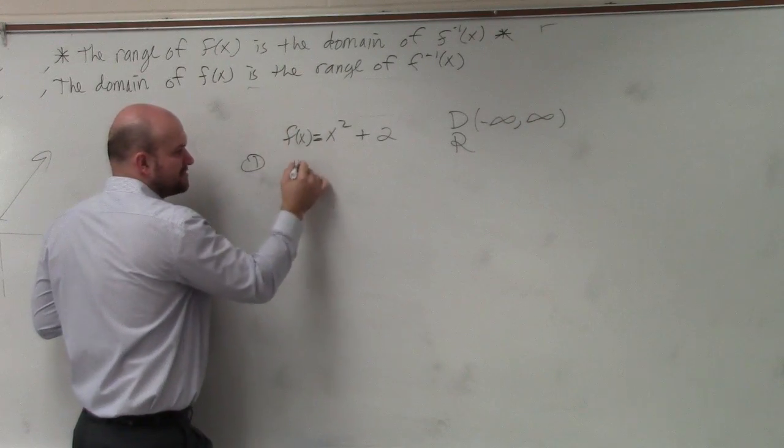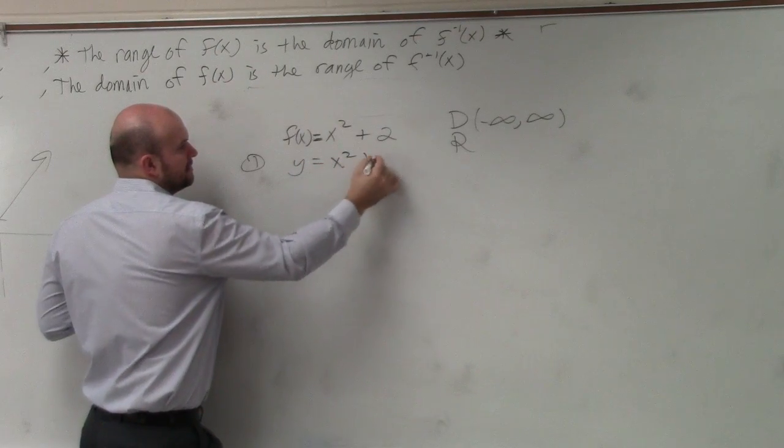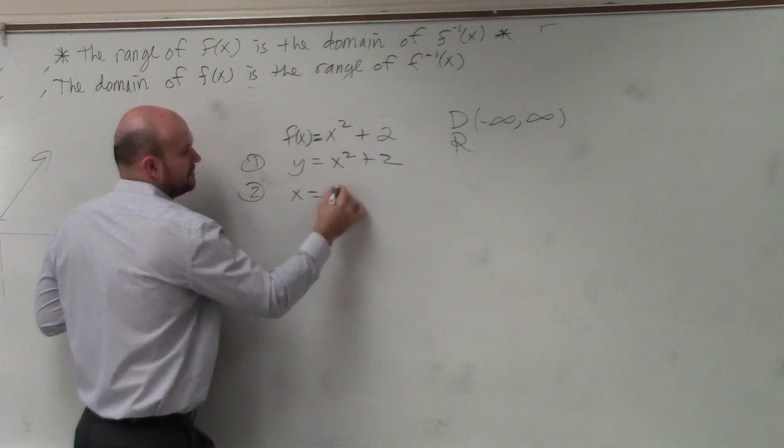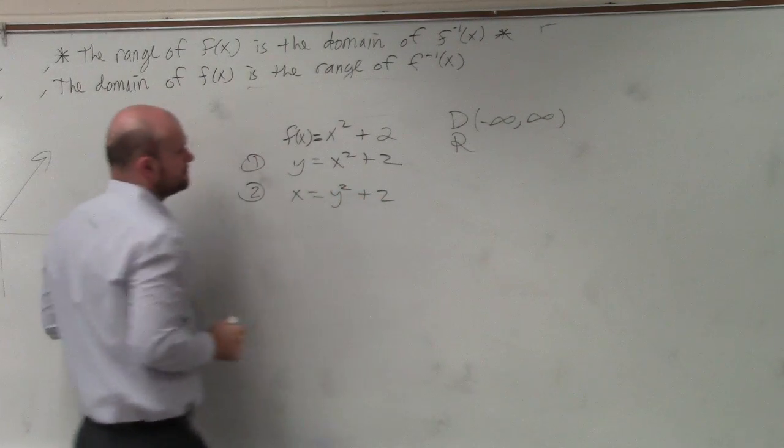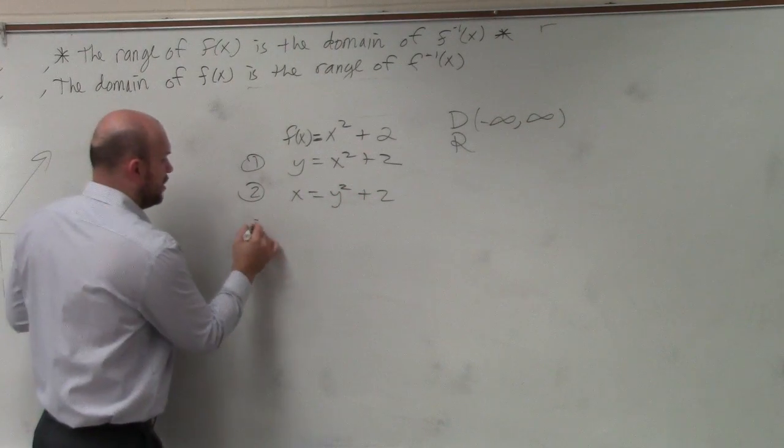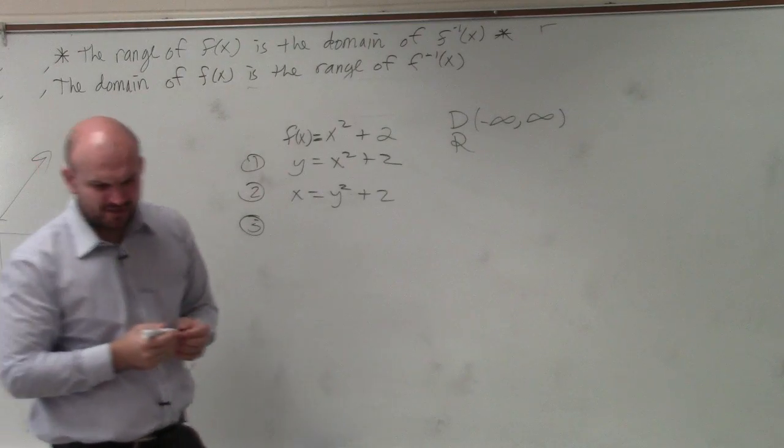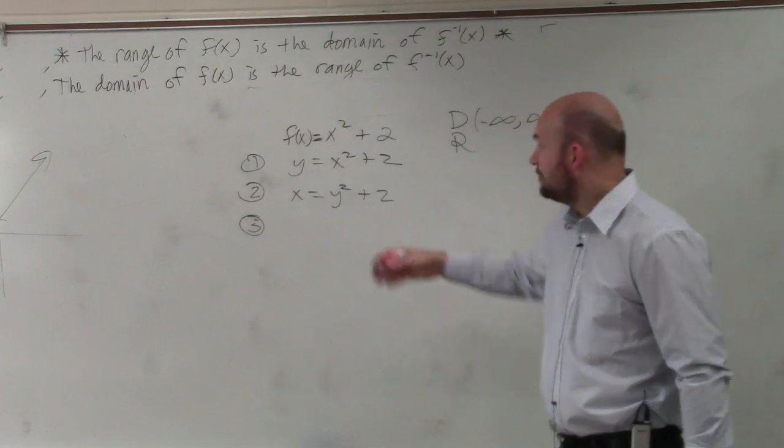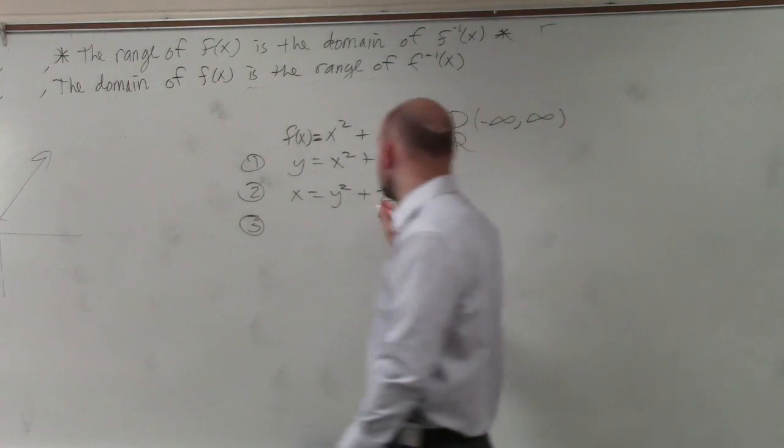So step one, replace f of x with y. Step two, swap x and y. Step three, solve for y. Well, how do we solve for y? y is squared. Same way we solved for y in the last one. Use your inverse operations. First thing we want to do is undo addition and subtraction.